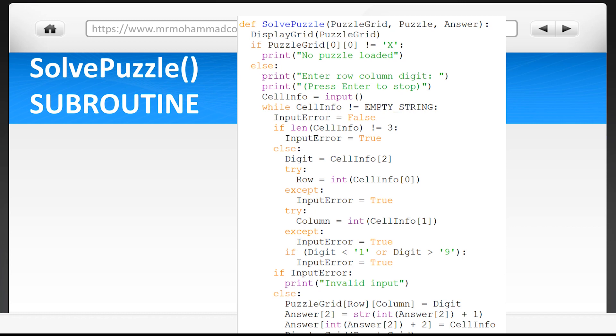They're then given an instruction to press enter in order to stop. Now at this point I would assume some sort of while loop or indefinite iteration is going to take place here after the user entered the digit. And here we go, we can now see the while loop condition.